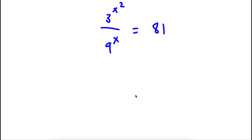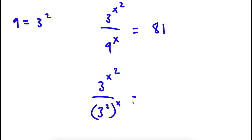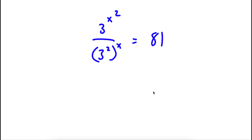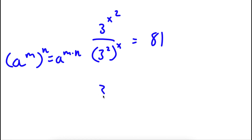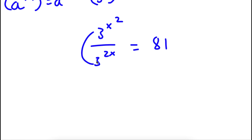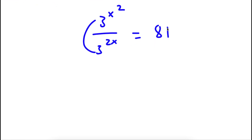Alright, so I have 3 to the power of x squared over 9 to the power of x is equal to 81. Now, first off, 9 is equal to 3 to the power of 2. So if I replace 9 with 3 to the power of 2, I get 3 to the power of x squared over 3 to the power of 2 to the power of x is equal to 81. Now, if I have something in the form A to the power of M to the power of N, this is equal to A to the power of M times N. So 3 to the power of 2 to the power of x equals 3 to the power of 2x. Now, as you can see, both bases are 3, so I'm going to want to change 81 to something with a base of 3.